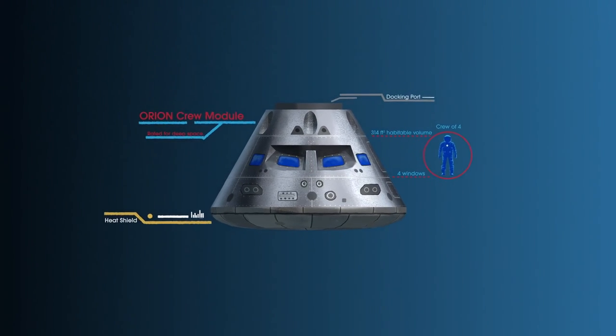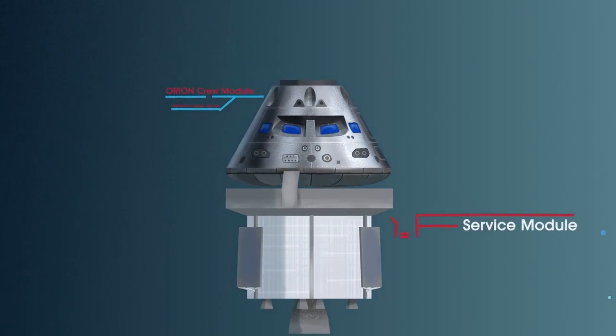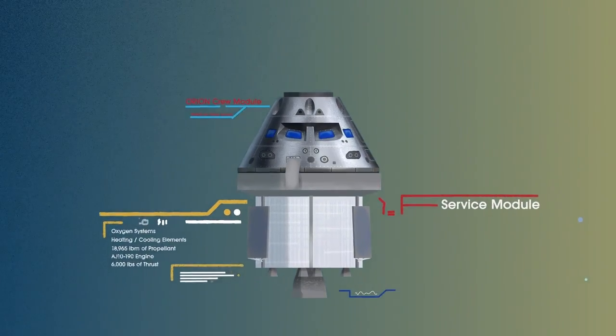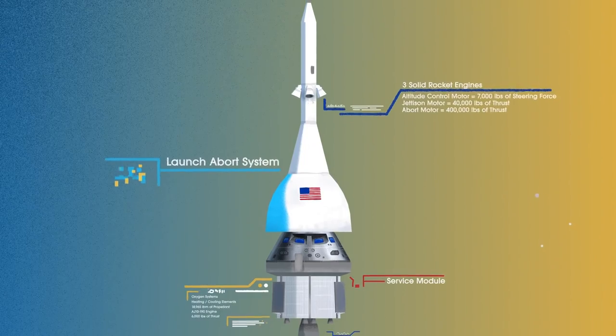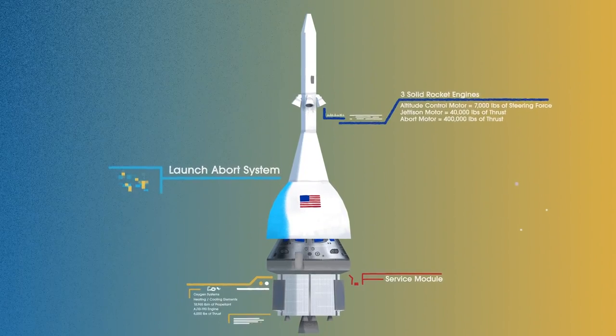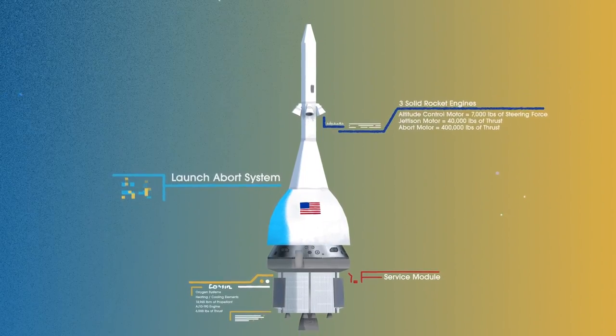The crew module, where up to four astronauts will live and work throughout the flight. The service module, with life-support systems for the crew and its own engine and fuel reserves. And a launch abort system, with engines capable of pulling the crew module to safety during launch should anything go wrong.